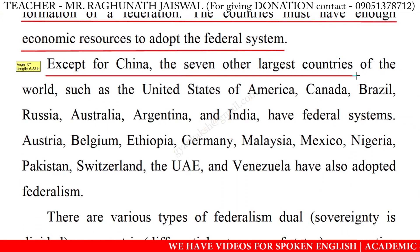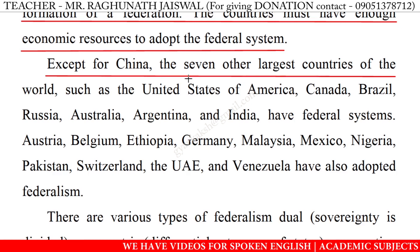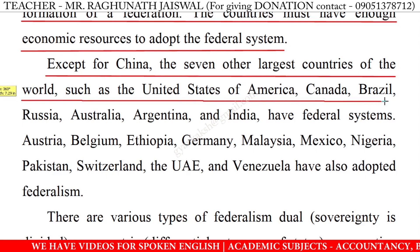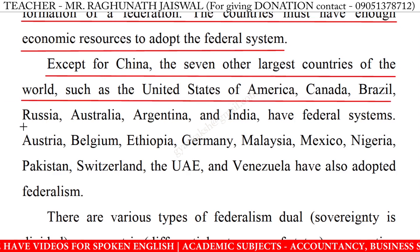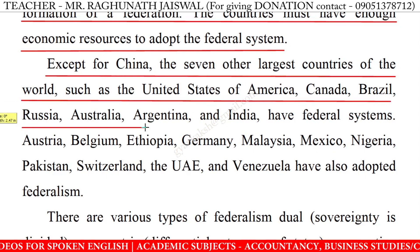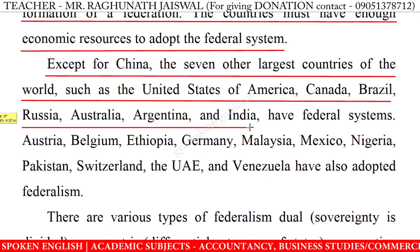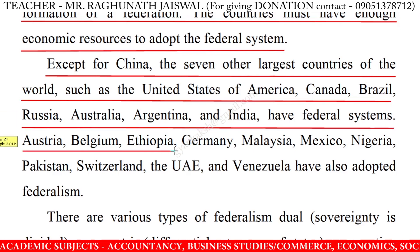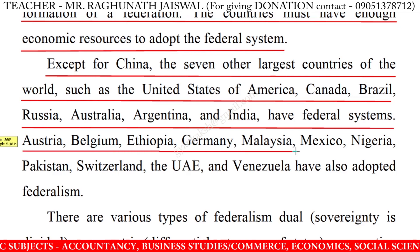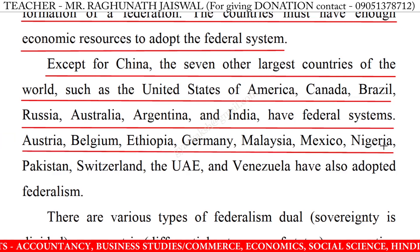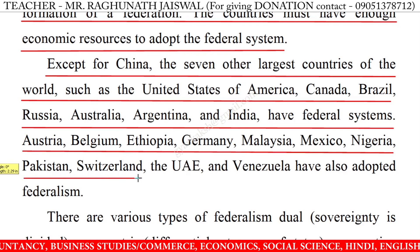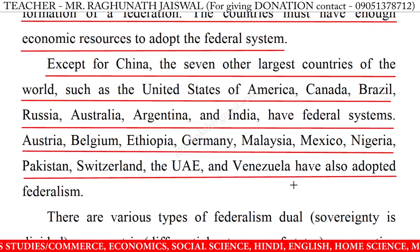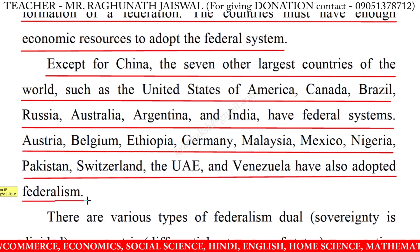Except for China, the seven other largest countries of the world — such as the United States of America, Canada, Brazil, Russia, Australia, Argentina and India — have a federal system. Austria, Belgium, Ethiopia, Germany, Malaysia, Mexico, Nigeria, Pakistan, Switzerland, the UAE and Venezuela have also adopted federalism.